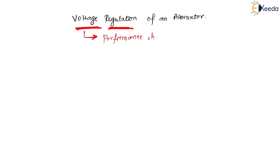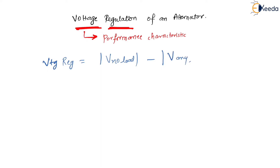It is a performance characteristic of a machine. Now let us understand what voltage regulation is. It is given by the magnitude of voltage at no load minus the magnitude of voltage at any load, divided by the magnitude of voltage at rated load.